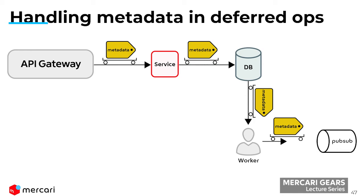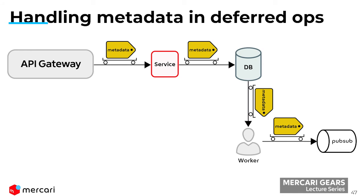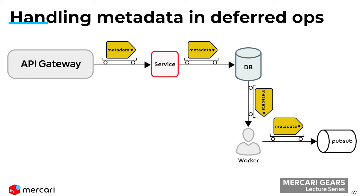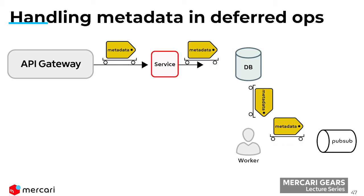A potential solution would be having a store that stores the metadata, with some identifier linking the actual data the service stores — or the request ID — to the metadata. When the service stores something to the database, it includes that identifier. When the worker reads the information from the database, it can use the same identifier to load metadata from the metadata store and further propagate it to the rest of the services needed to complete the request.